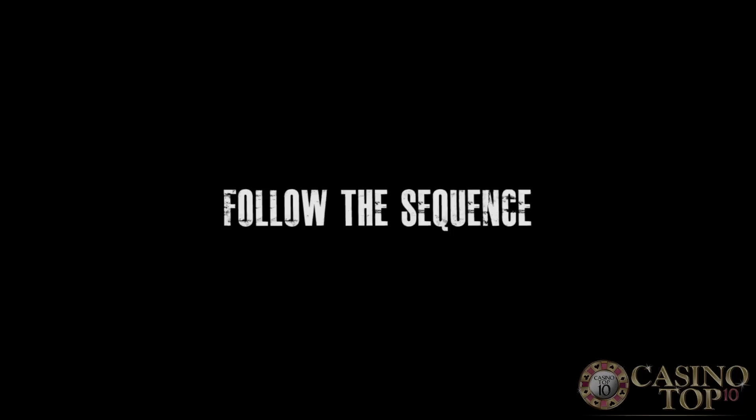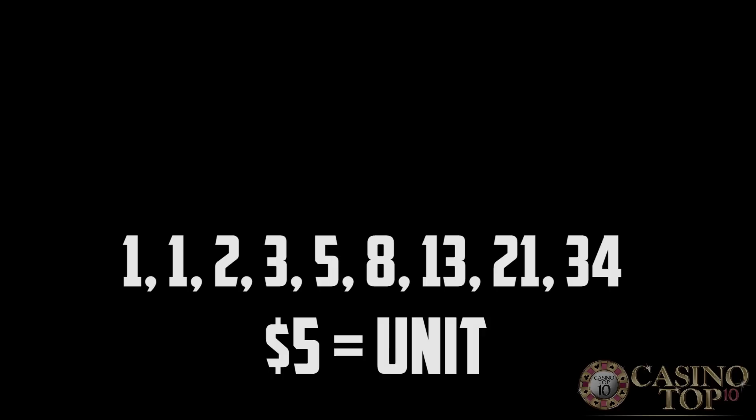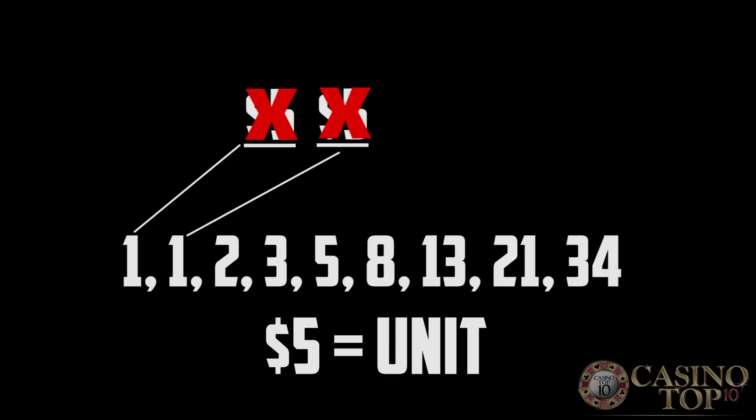Start at the beginning of the sequence and every time you lose a bet, move one number to the right. Whenever you win a bet, start again at the beginning of the sequence. So using five dollar betting units, your first wager will be five bucks, and if you lose, bet another five bucks. If you lose that, bet two units — which is ten bucks — and if you lose that, move on to the next number and bet three units, $15.